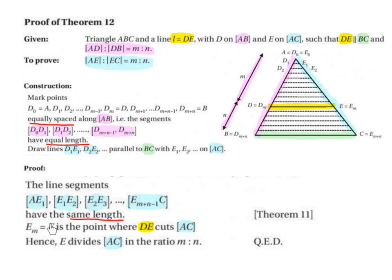So EM is equal to E, so the point E here is also called EM. So EM, which is equal to E, is the point where DE cuts AC. Hence, E divides AC in the ratio M to N. So here's M, this distance is M, this distance is N, so AC is therefore cut in the same ratio.